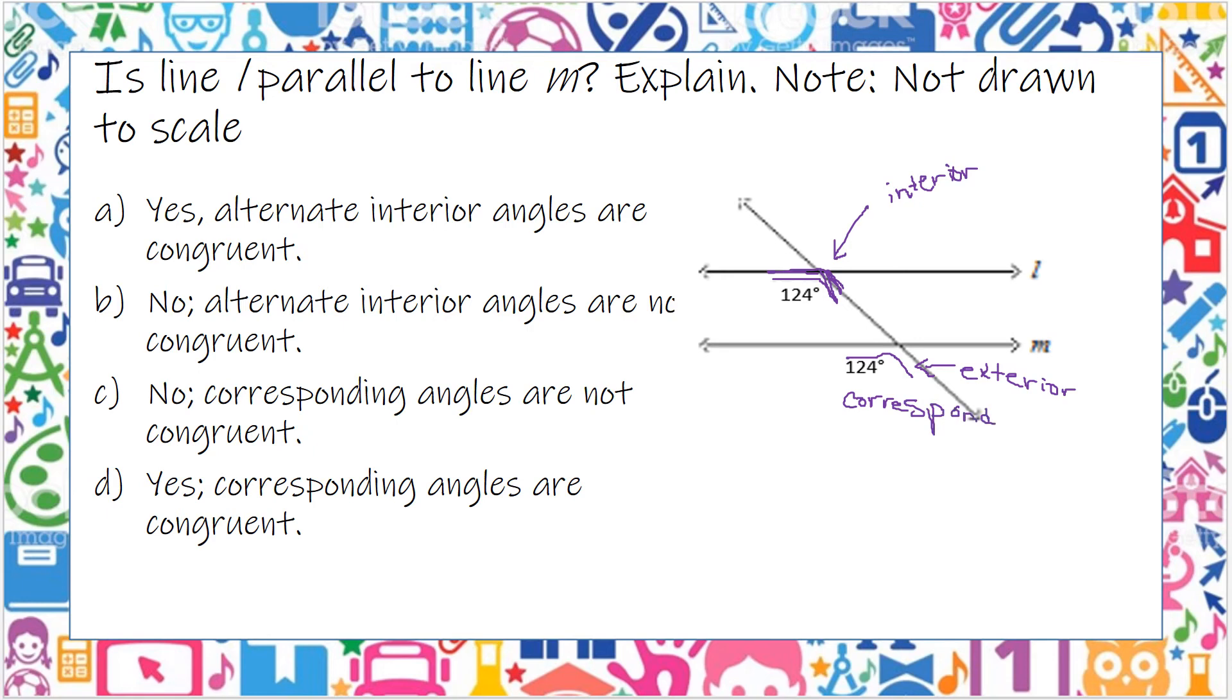So as long as these two numbers match, 124 and 124, as long as those are congruent, they're the exact same number, then yes, they are congruent. If they weren't, we would have to say not congruent.